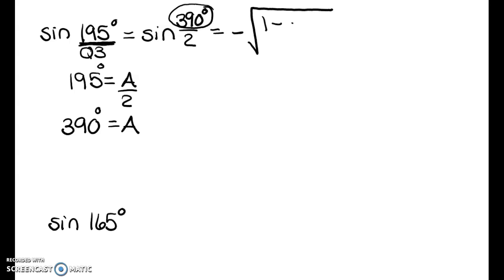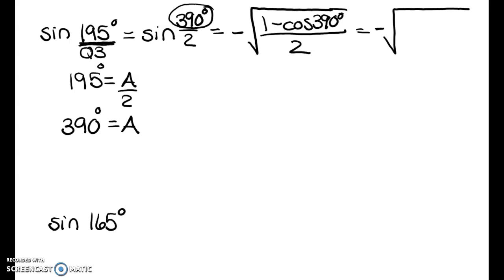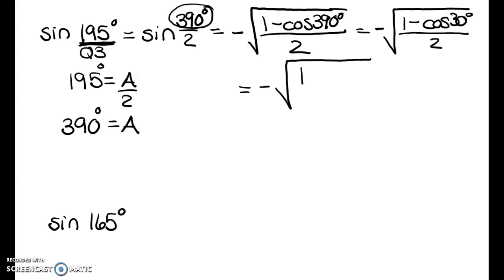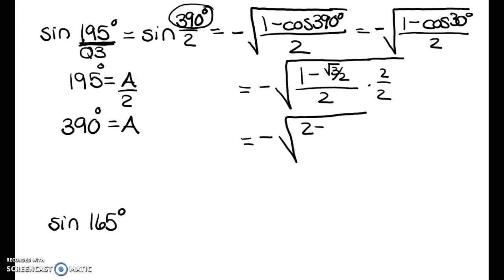Using the negative version: −√((1 − cos(390°)) / 2). Since 390° is coterminal with 30°, cos(390°) = cos(30°) = √3/2. Again, multiply under the radical by 2/2 to eliminate the complex fraction, and I get −√((2 − √3) / 4) as the final answer.